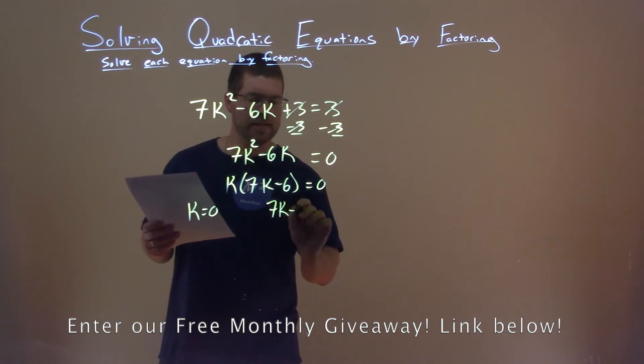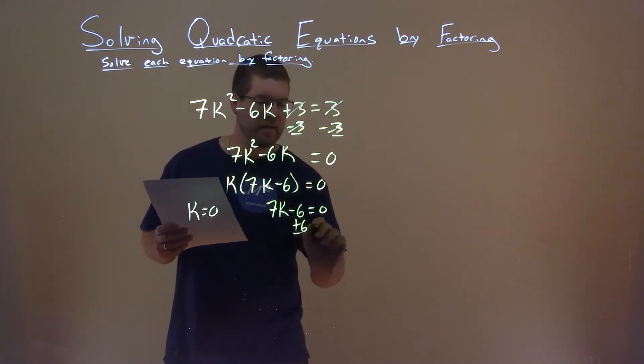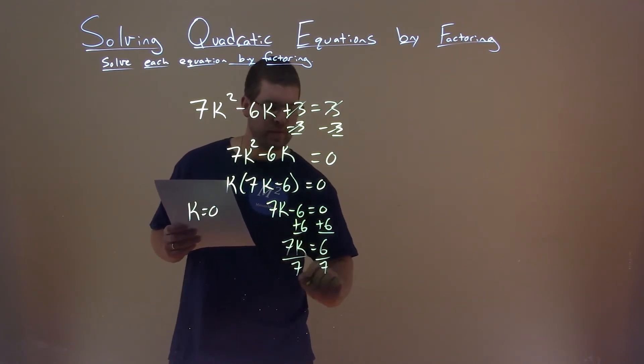And 7k minus 6 equal to 0, and now we're solving for k. Add a 6 to both sides, we have 7k here, equals a positive 6, divide by 7, and k equals 6 sevenths.